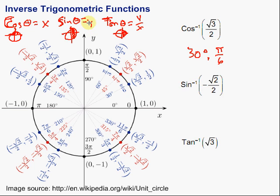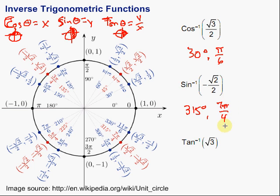For the next one, we're looking for a y-coordinate — the inverse Sine — in quadrants one and four. We want a y-coordinate of negative square root of 2 over 2. In this case, it is 315 degrees, or 7π over 4.